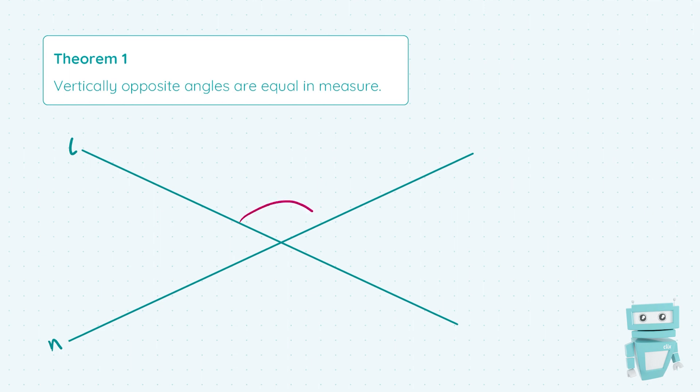So in this case, imagine we had up here an angle of 120 degrees. We could say that down here this is also 120 because these are vertically opposite angles and they don't touch.